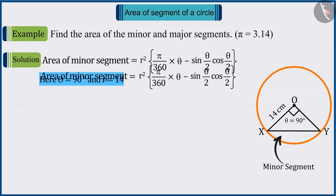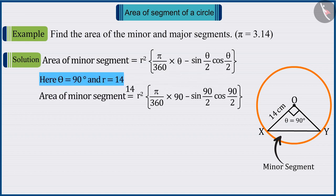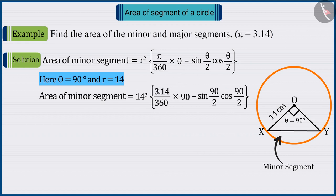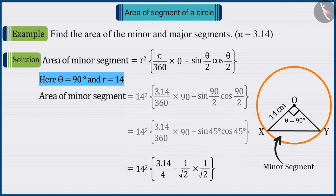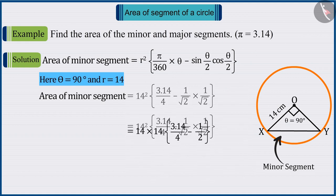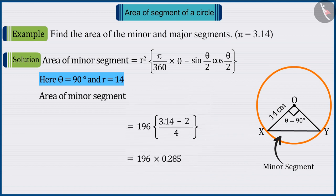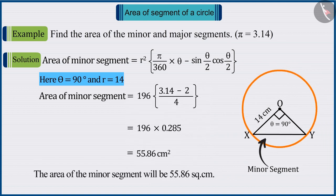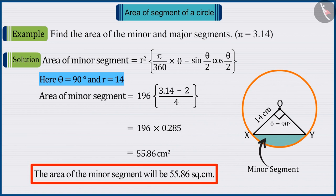According to the given information, on putting the value of theta and R, i.e. radius, in the formula and solving, the area of the minor segment is obtained as 55.86 cm².